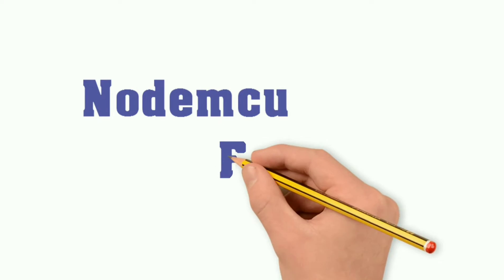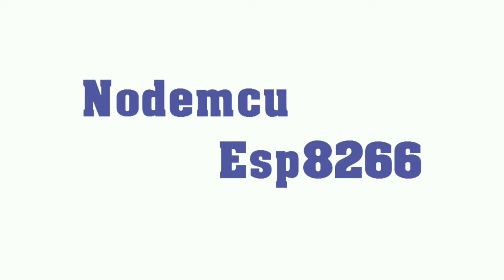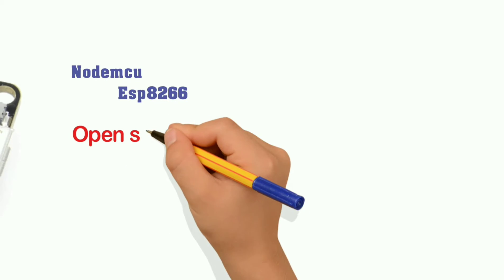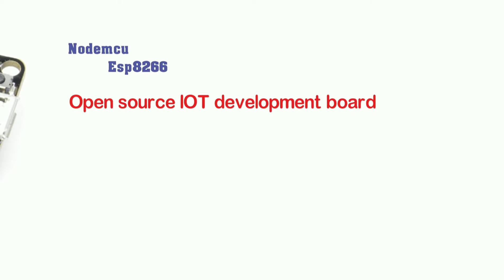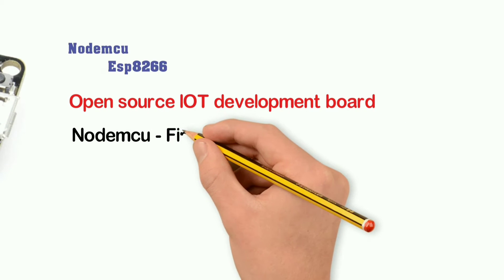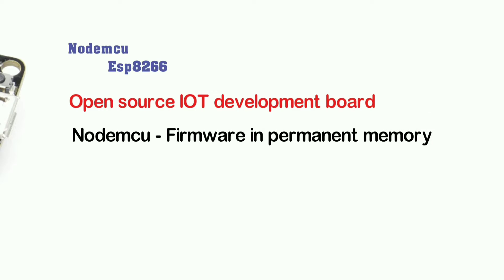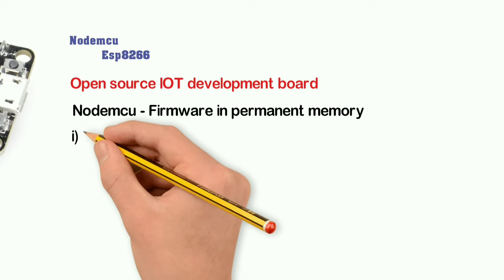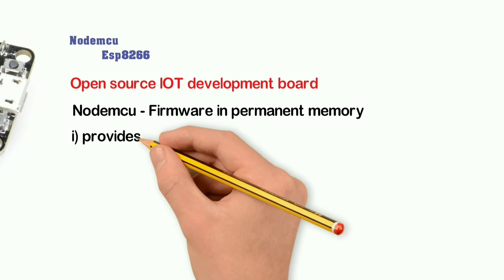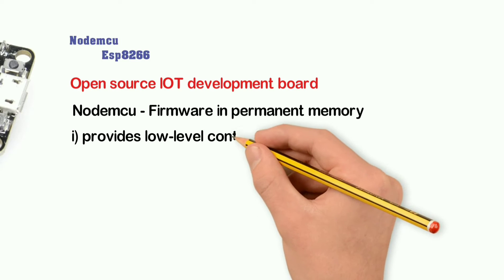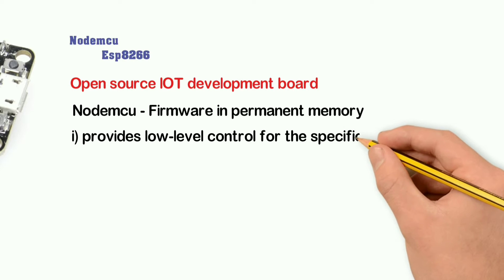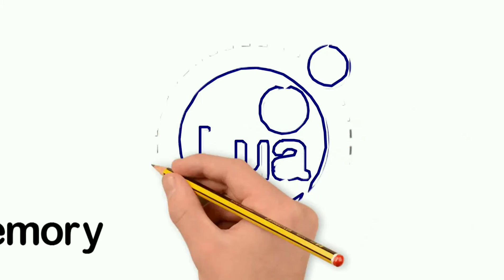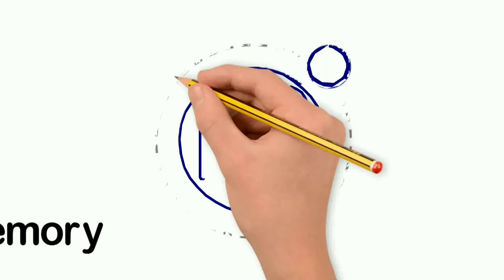First of all, we want to talk about IoT development in NodeMCU. There are no restrictions. In NodeMCU, there is a firmware. In this firmware, there is permanent memory. If you update your programming, it will be erased. Using serial communication, you can fetch memory and check status conditions.